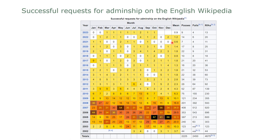Since then it has stayed at about that level or just below, with a gentle ongoing drop. As I'm recording this, we've had nine new administrators this year. I'm hoping that by Wikimania that figure will have risen to 11, but that's still about one per month. With roughly 500 active administrators on the English Wikipedia and appointing one per month, we'd need each administrator to remain an active volunteer for about 40 years for that to work out.